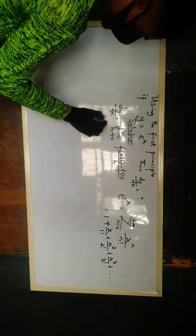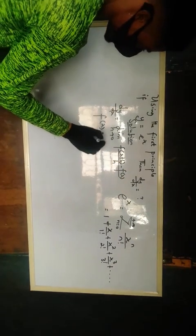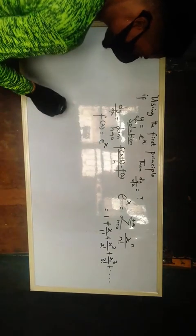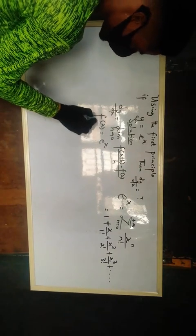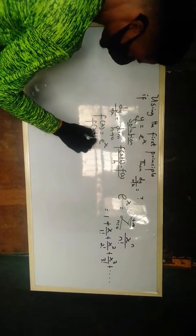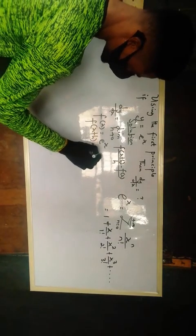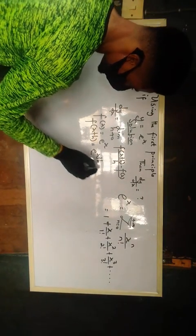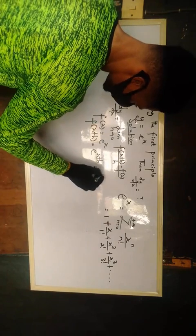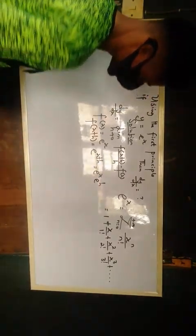Now, let's say our f of x is equal to e raised to power x, then f of x plus h is equal to e raised to power x plus h, and this is the same thing as e raised to power x times e raised to power h.